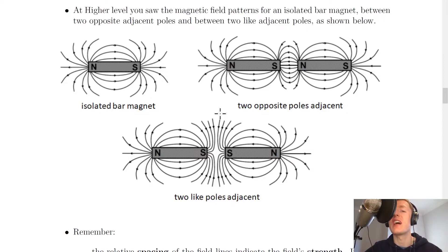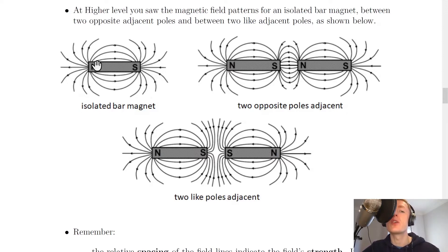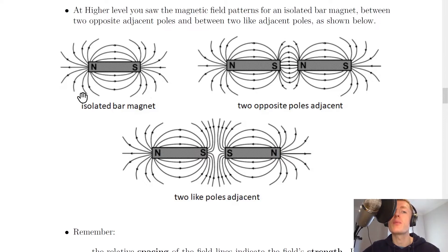So these are just presented as a reminder. For an isolated bar magnet we have the north and south pole and we can draw the magnetic field lines curving from the north to the south pole around the bar magnet. The field lines are going from north to south because field lines will always go out of a north pole and into a south pole. Either side of the bar magnet the lines are still curved, going out of the north pole and into the south pole.